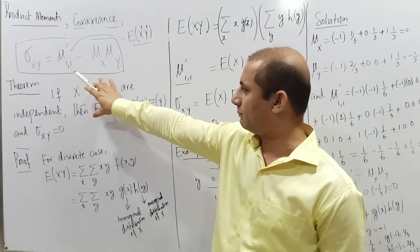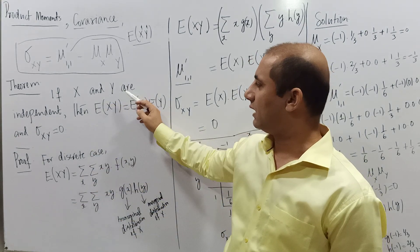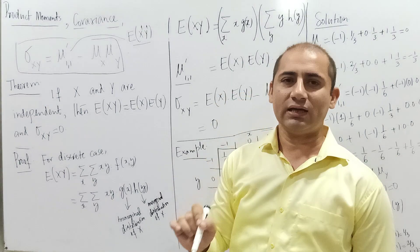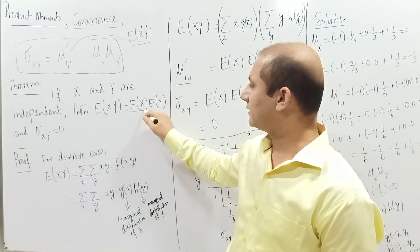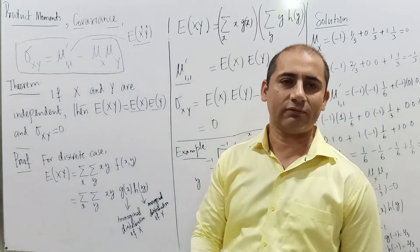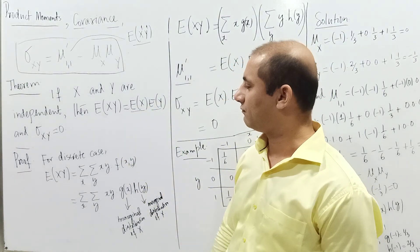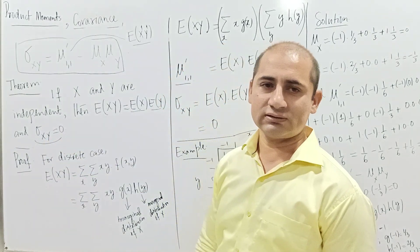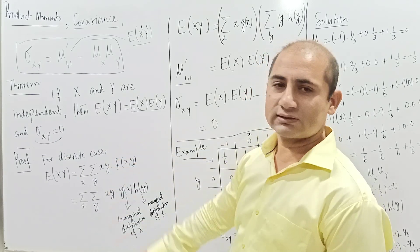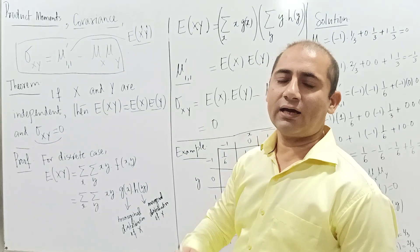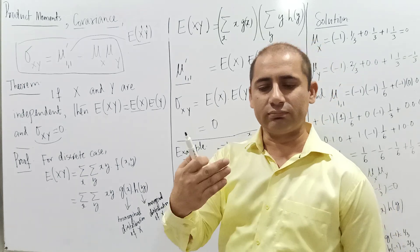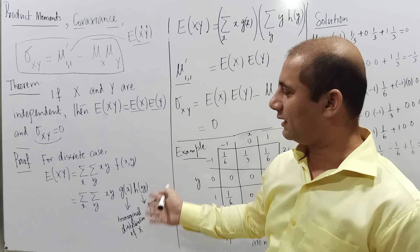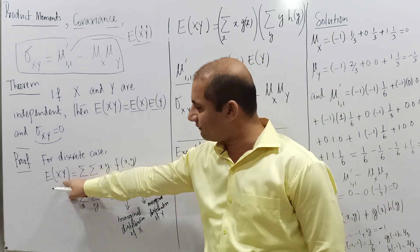We will prove the theorem that if X and Y are independent, then E[XY] equals the product of their expectations, E[X] times E[Y], and consequently the covariance is zero. To prove this, we consider the discrete case; the continuous case is very similar, using integrals instead of summations.